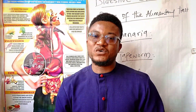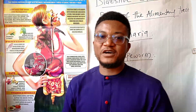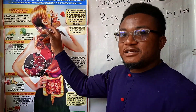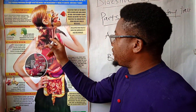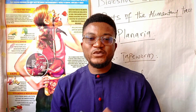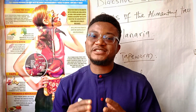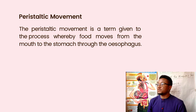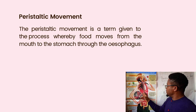The bolus then moves to the next organ, the oesophagus. The oesophagus connects the mouth to the stomach and enables the bolus to flow down through a specific movement called peristaltic movement, which enables the bolus to flow down to the stomach.